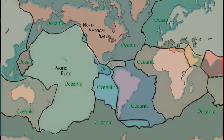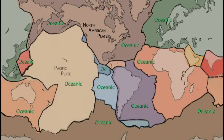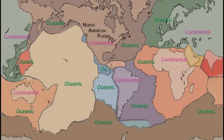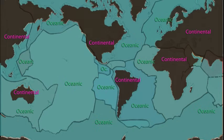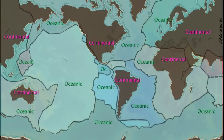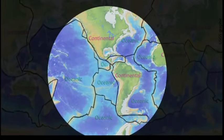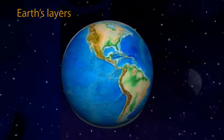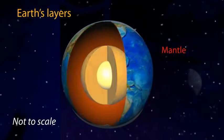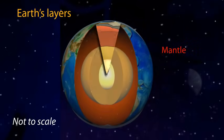like the Pacific plate, or like the North American plate, can be part oceanic and part continental lithosphere. We will return to lithosphere types in a minute, but first let's look inside the Earth to clarify the layers.